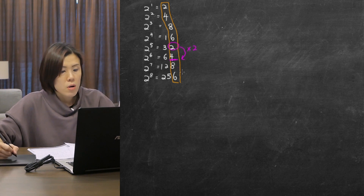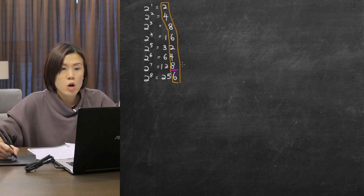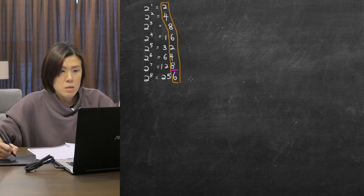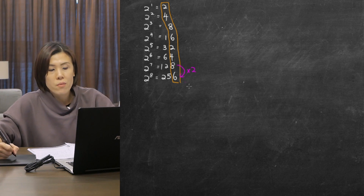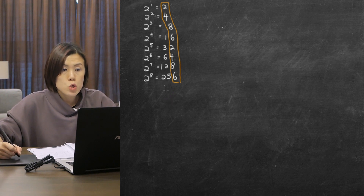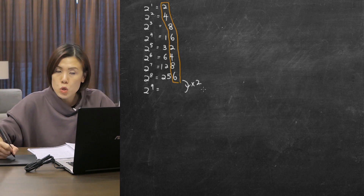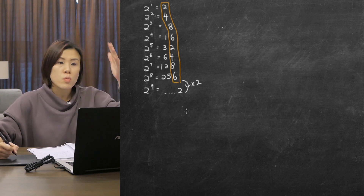Continuing, 2 to the power of 7 has ones digit 8, obtained from the previous ones digit 4 multiplied by 2 — since 4 times 2 is 8. And 2 to the power of 8 ends with 6 because the previous ones digit is 8 and 8 times 2 is 16. This pattern holds for all further powers: 2 to the power of 9 will end with 2 again since 6 times 2 is 12. So the ones digits repeat as 2, 4, 8, 6 continuously.